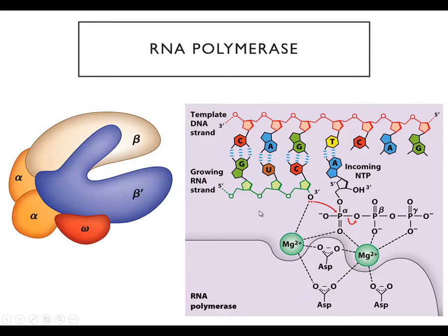The enzyme that carries this out is called RNA polymerase — just like the DNA enzyme is called DNA polymerase, it polymerizes RNA. It adds new ribonucleotide triphosphates to the three prime end of an existing RNA strand. Enzymatically, it works a lot like DNA polymerase, with a similar active site. It has to stabilize all those negative charges, so it has magnesium ions.